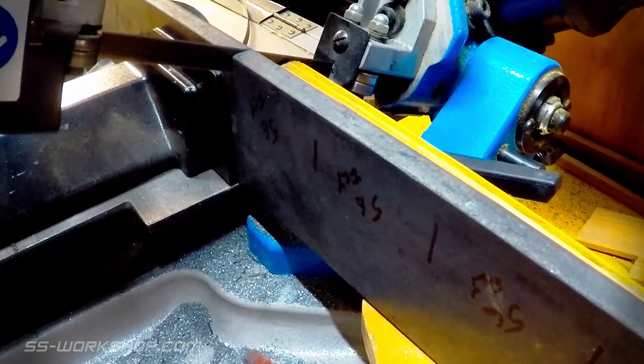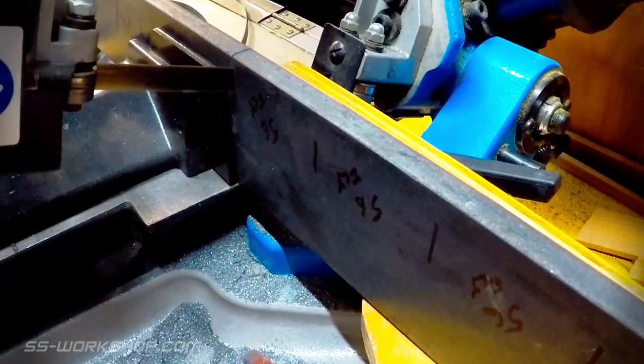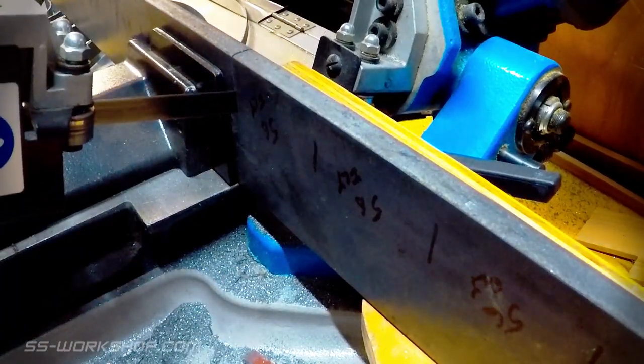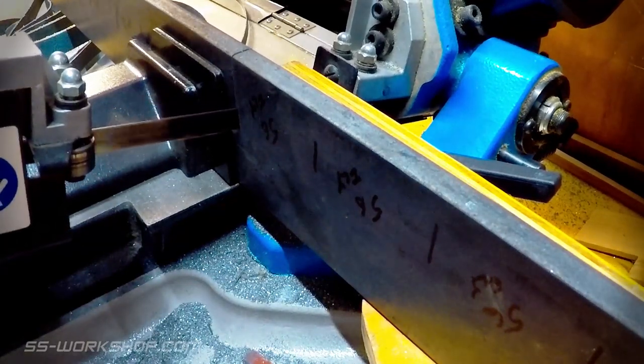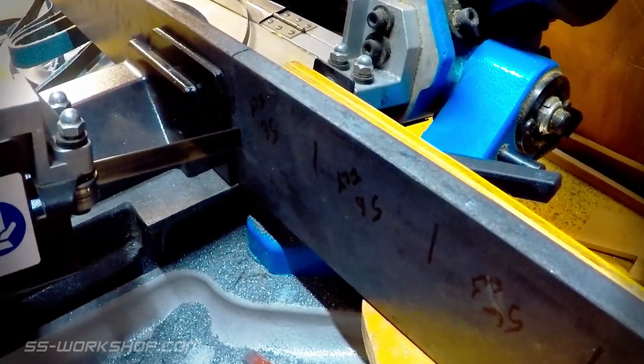Start work over at the horizontal bandsaw cutting out some flat bar for a pair of wheels each. This will make facing the part faster reducing setup time.